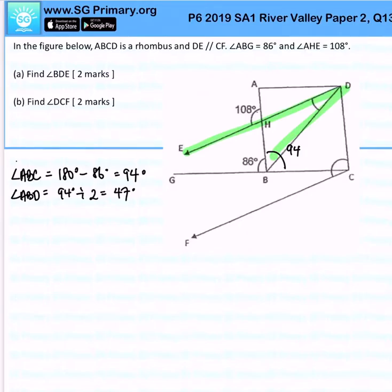Now next angle PHD. It is 108 degrees because it is vertically opposite to angle AHE.